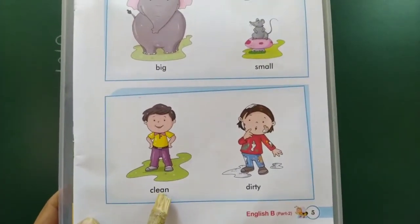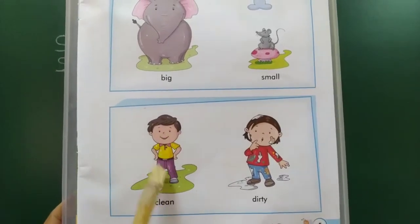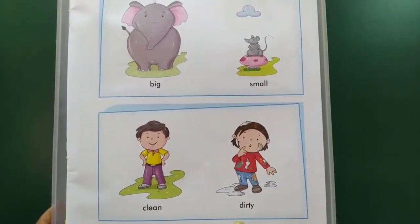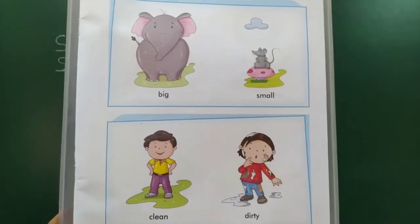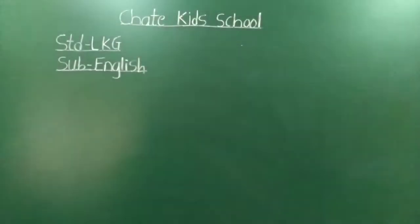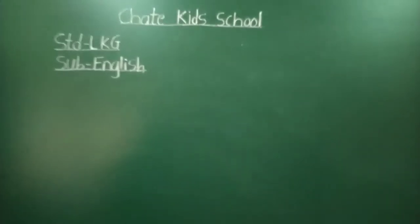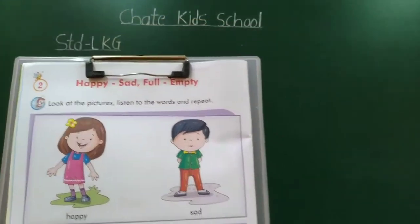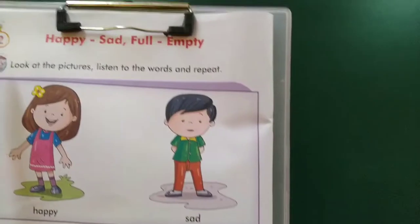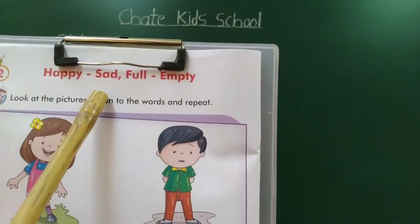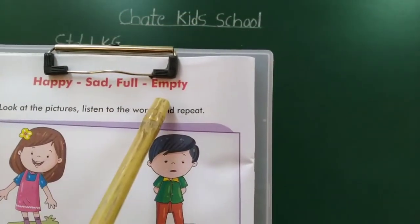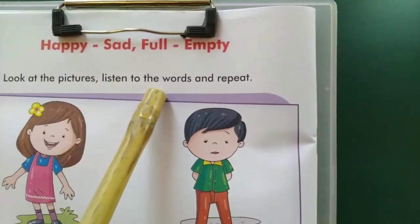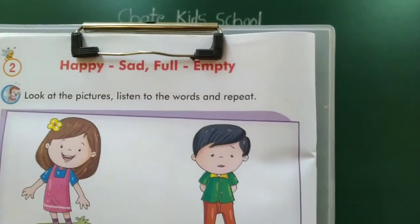Clean, dirty. Listen, number 2: Happy, Sad, Full, Empty. Look at the pictures, listen to the words and repeat.